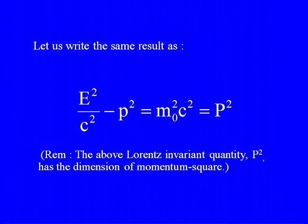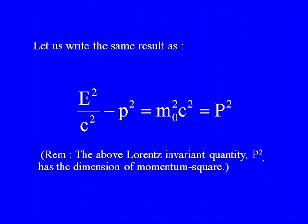That is pretty interesting. If we write all these things in the dimension of momentum squared, we get E squared divided by c squared minus the linear momentum p squared, and you get something which is invariant. I denote this by capital P squared. Just to note, this is still momentum squared — let us see what is behind all this.